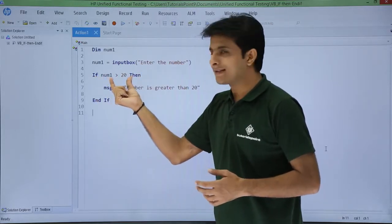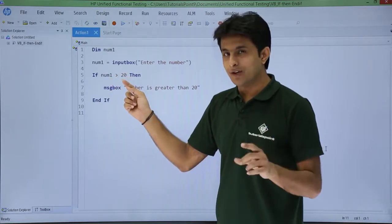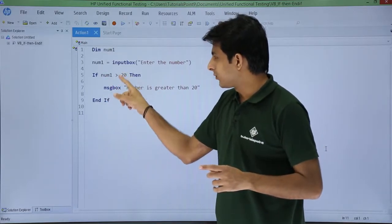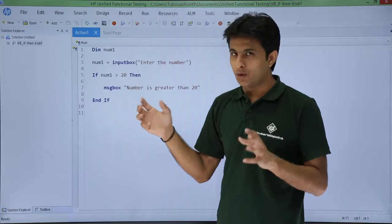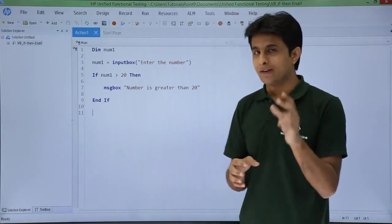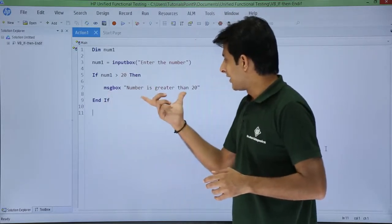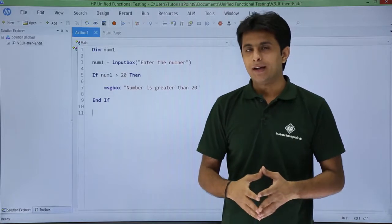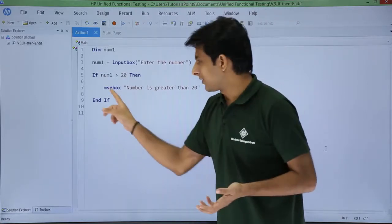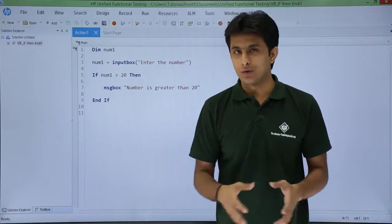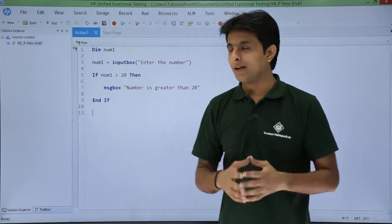Now IF num1 is greater than 20 - if this condition is true, then you have to execute one statement. The statement is MsgBox 'number is greater than 20'. If it is not true, if it is false, it will go to END IF. The condition will close itself. Let us see how we can execute this.